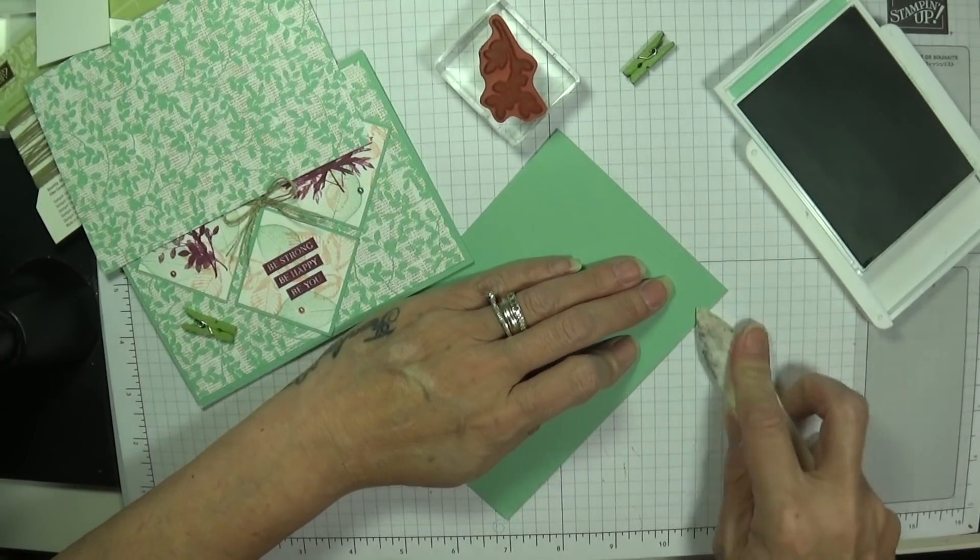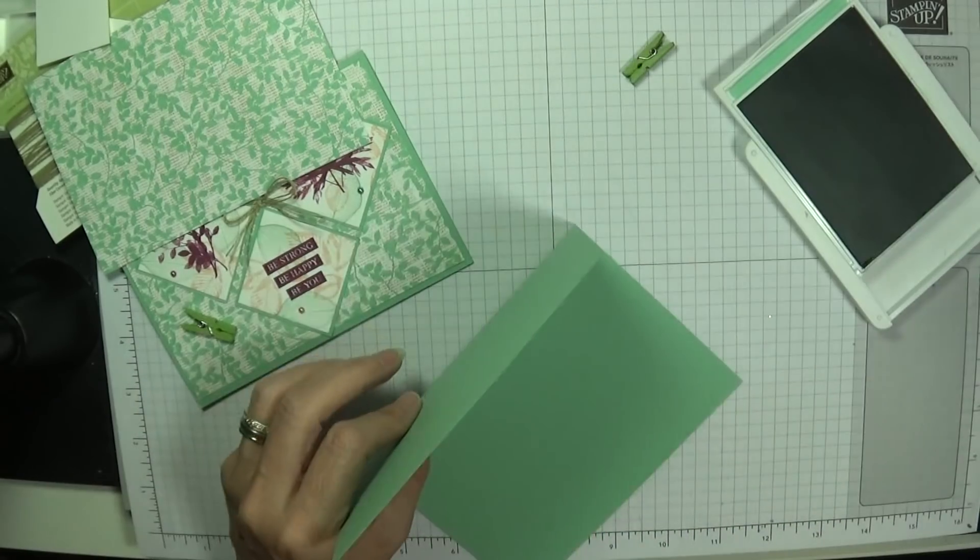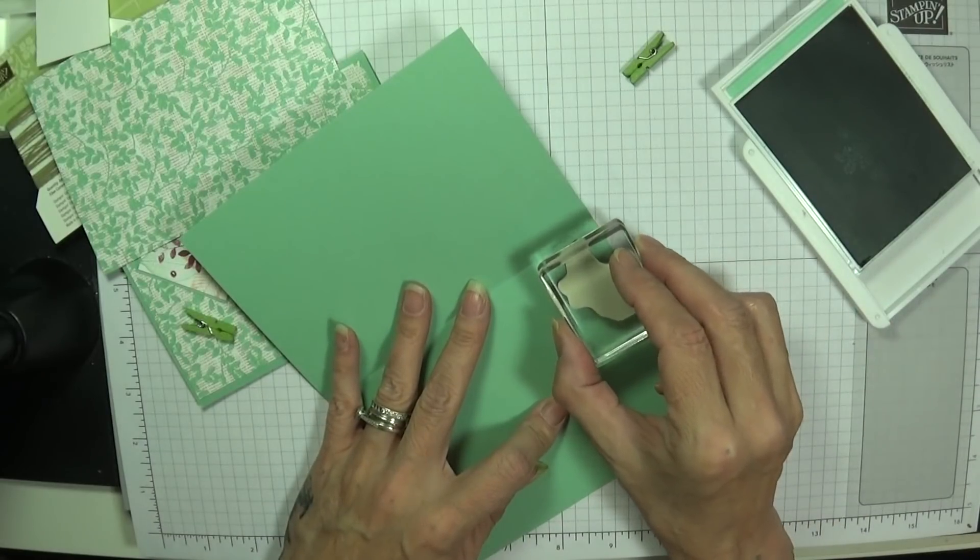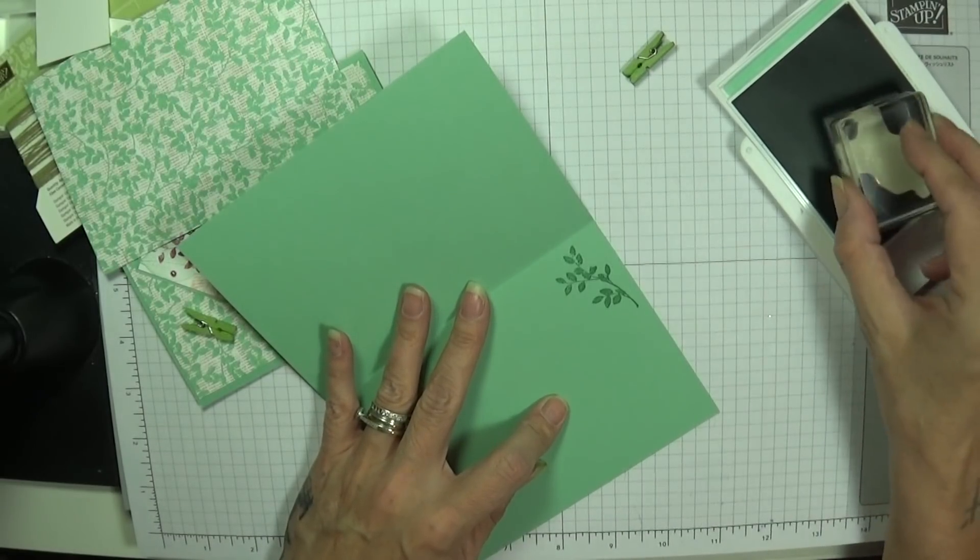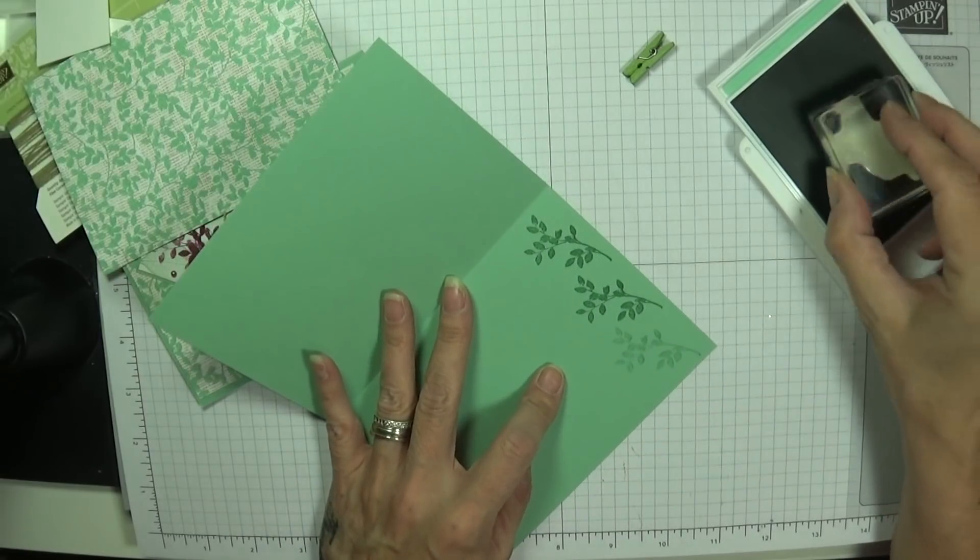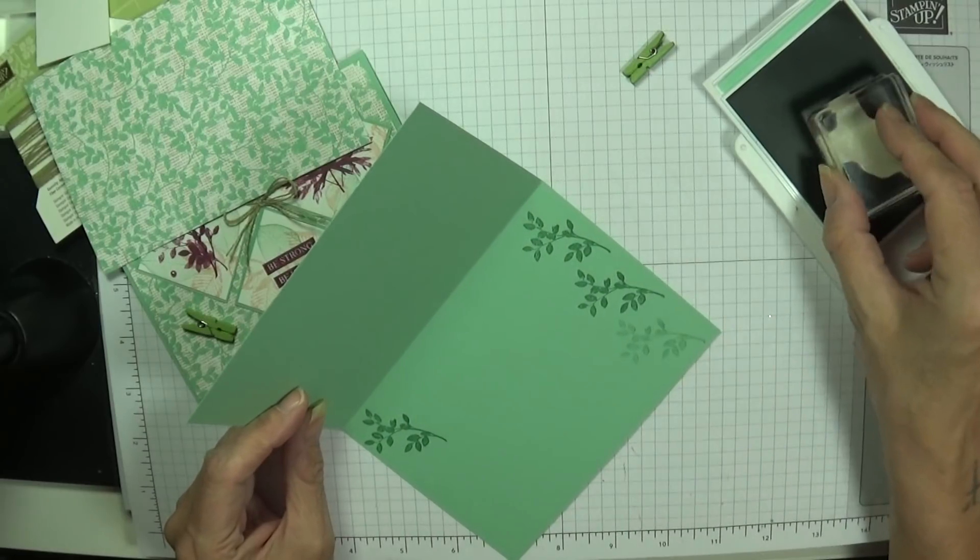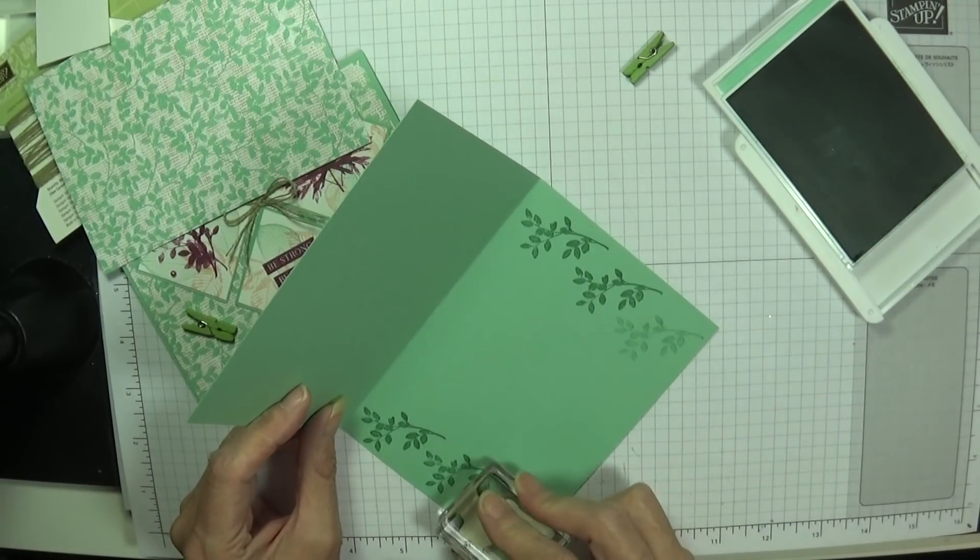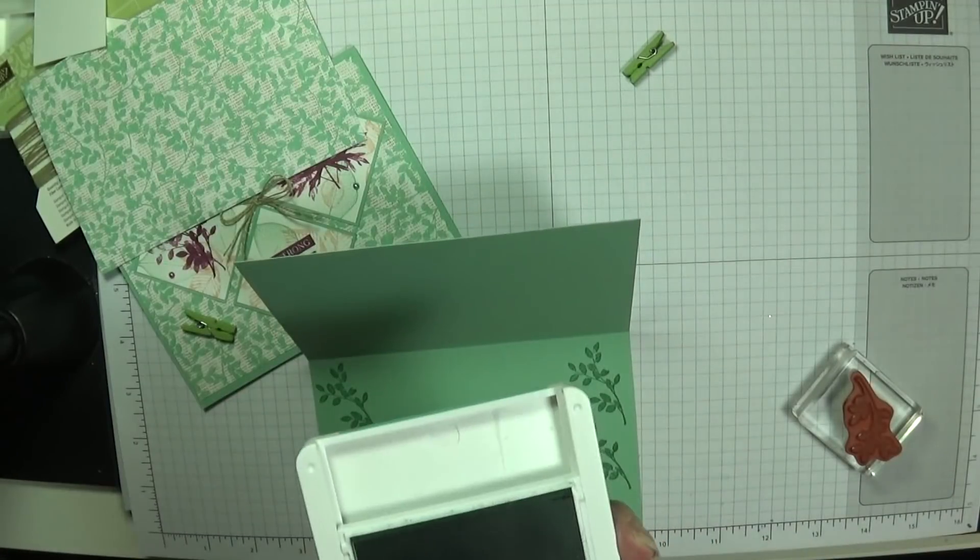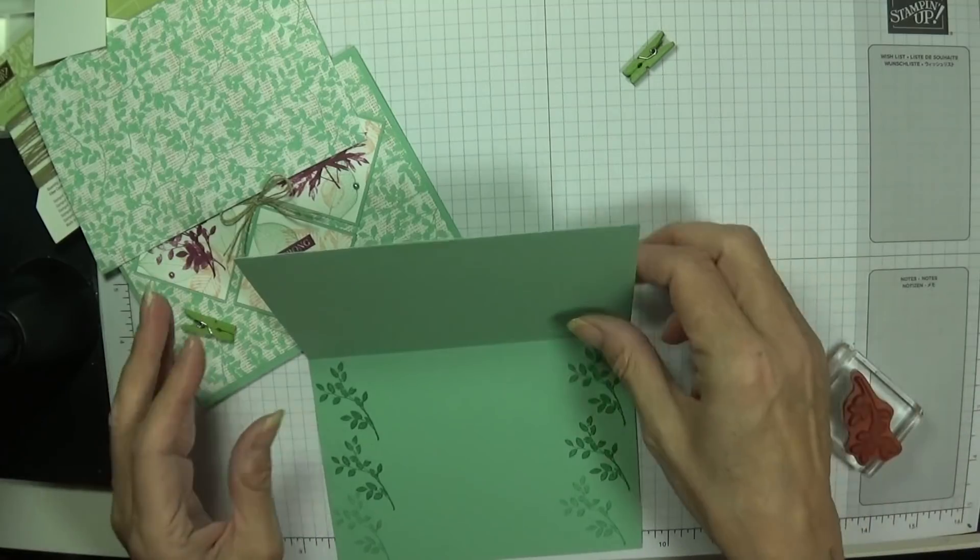So I'll just fold and burnish my card in the center. And while the ink is out, save me getting it out again later, I'm going to do it now. Perhaps I should have just faded it down. Oh, that looks quite nice actually. How's that? Really pretty. I'm loving it.